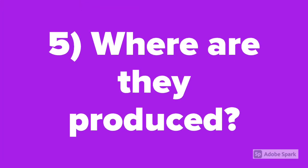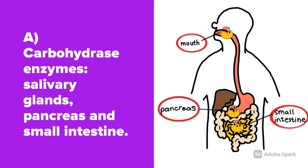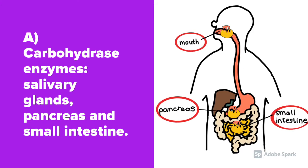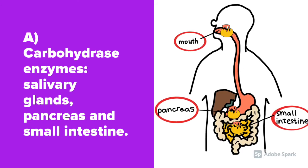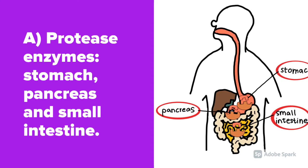Question number 5: Where are they produced? Carbohydrase enzymes are produced in the salivary glands, pancreas, and small intestine. Protease enzymes can be found in the stomach, pancreas, and small intestine.